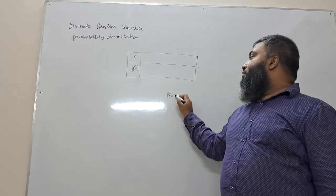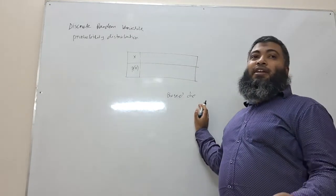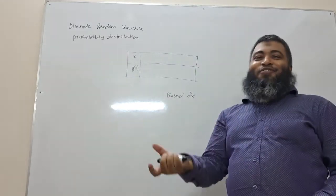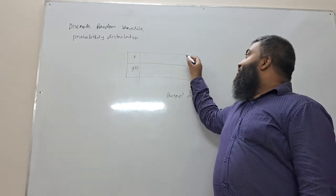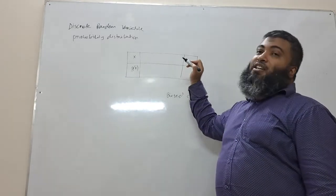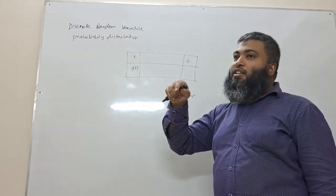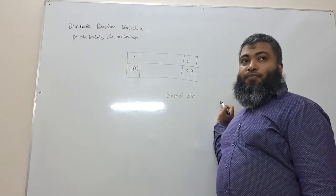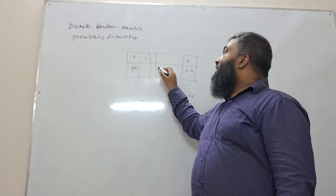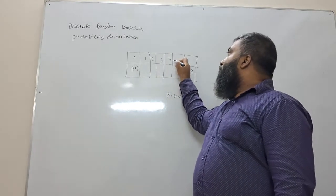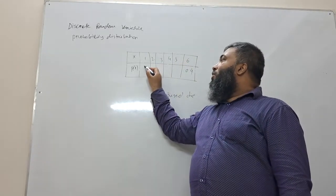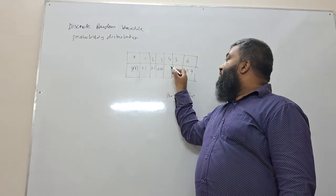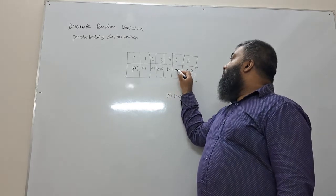Now for a biased die. The probability of getting 6 is 40%, so 0.4. The probability of 1 is 10%. Probability of 2 is 10%. Probability of 3 is 5%. Probability of 4 is 5%. And probability of 5 is 20%.